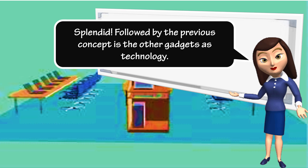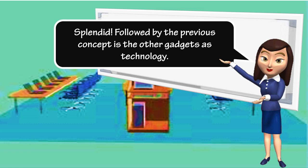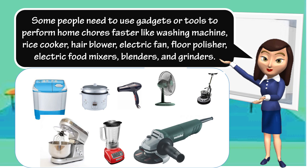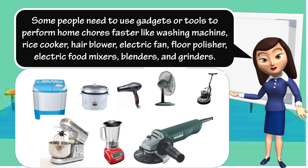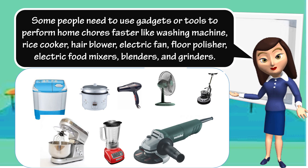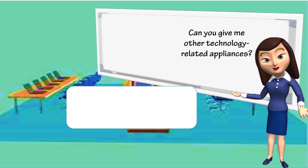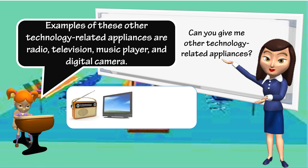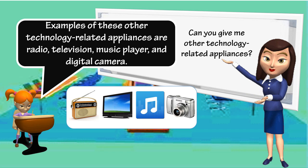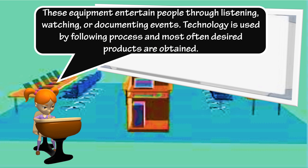Followed by the previous concept is the other gadgets as technology. Some people need to use gadgets or tools to perform home chores faster like washing machine, rice cooker, hair blower, electric fan, floor polisher, electric food mixers, blenders, and grinders. Examples of other technology-related appliances are radio, television, music player, and digital camera. These equipment entertain people through listening, watching, or documenting events. Technology is used by following process and most often desired products are obtained.